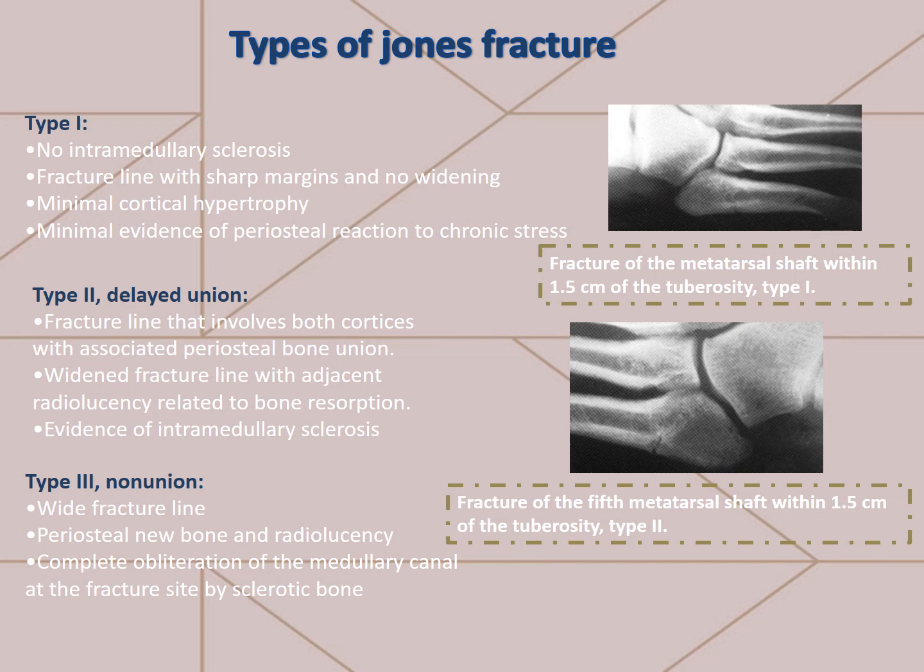Types of Jones fracture. Type 1: no intramedullary sclerosis, fracture line with sharp margins and no widening, minimal cortical hypertrophy, and minimal evidence of periosteal reaction to chronic stress.